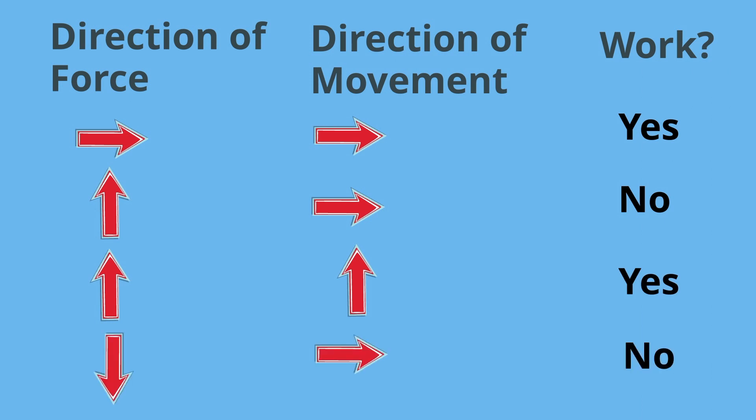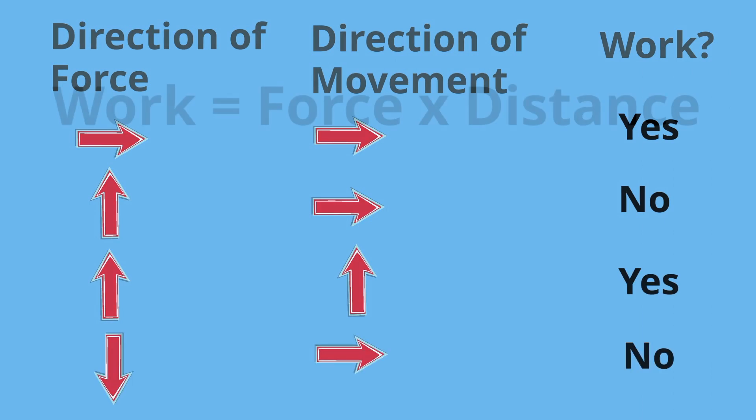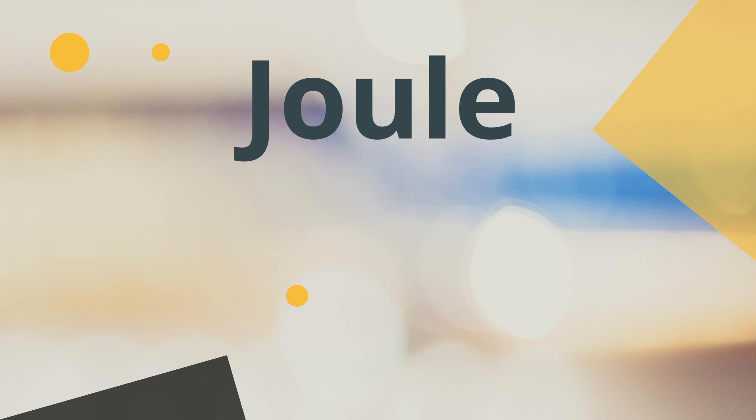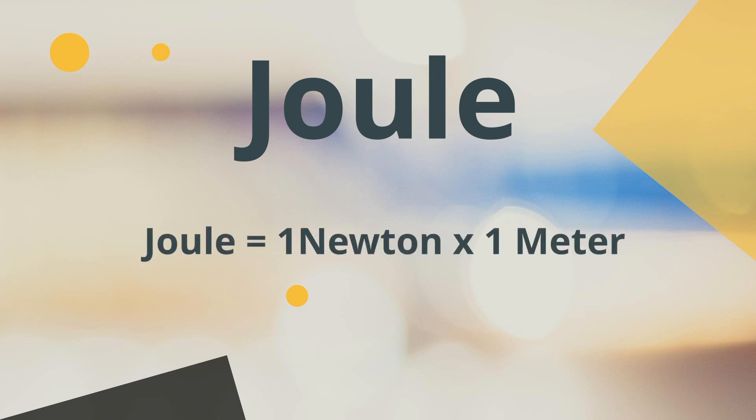You can calculate work by multiplying the force applied to the object by the distance — also called displacement — that the object moves. The formula is W = F × d. Work is expressed in joules, which is the amount of work done by a force of one newton acting through a distance of one meter.